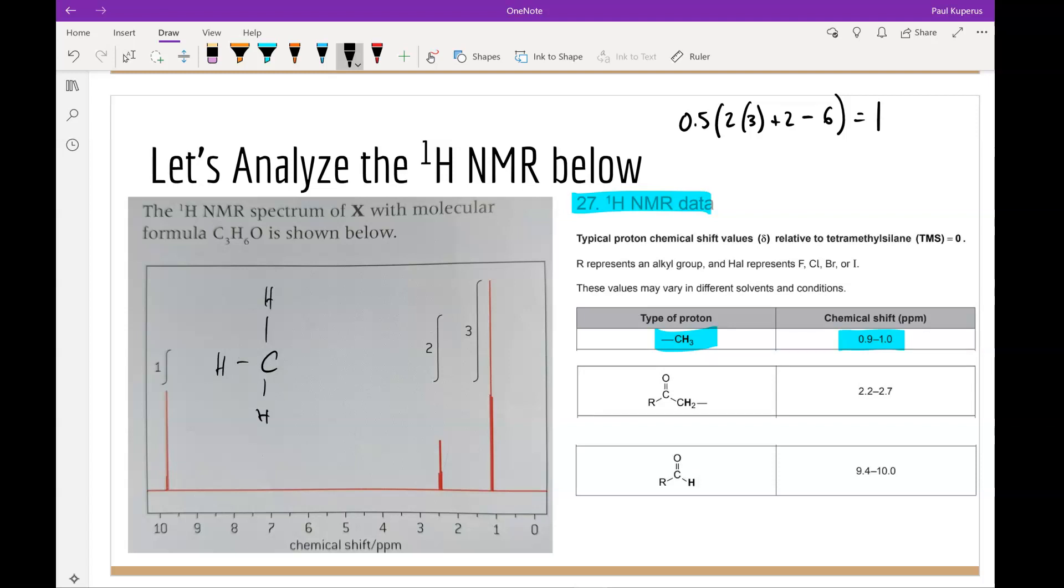Now if I keep looking at my chemical shift, my next one here has a peak at around 2.5. Now that has an integration shift or integration number of 2, which means two hydrogens are present. So I must be looking for H2s in my NMR data from my data booklet.